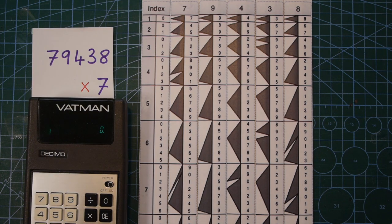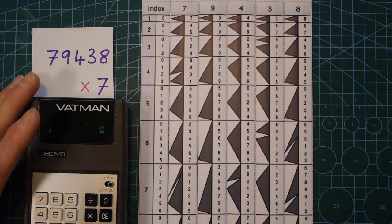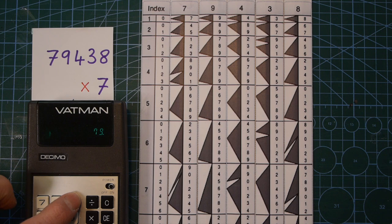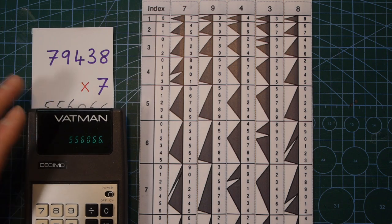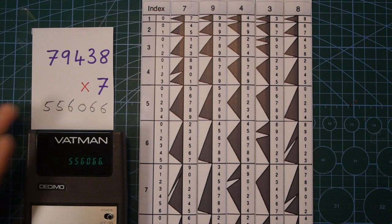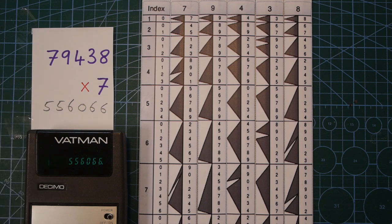Now, if you remember, these were invented before the electronic pocket calculator. But let's just do that calculation on the pocket calculator to check we were right. So, 79,438 times 7 equals, and there it is, 556,066. So, the rulers, without any batteries, they're always going to work, worked perfectly.